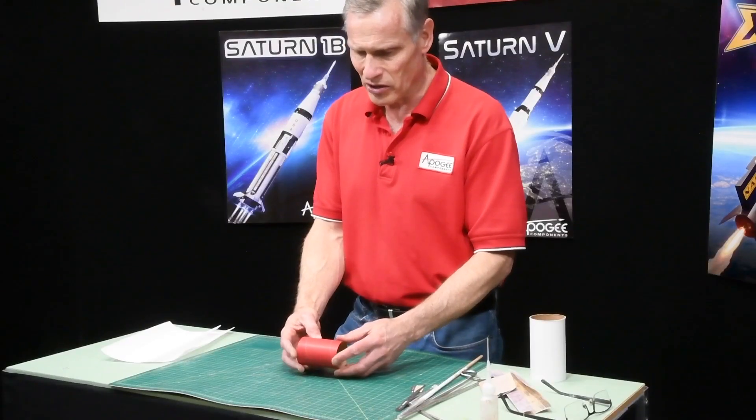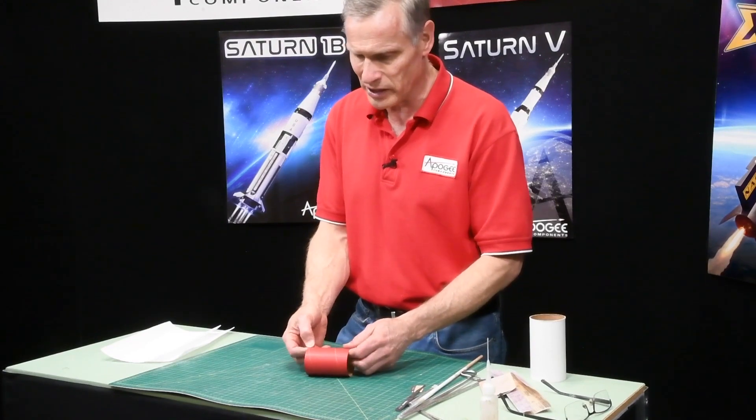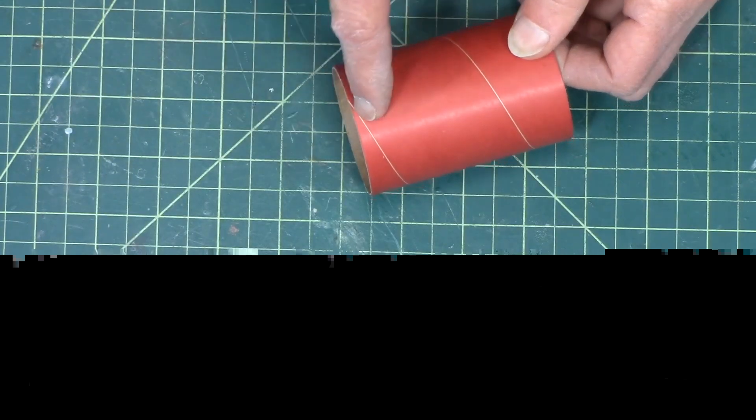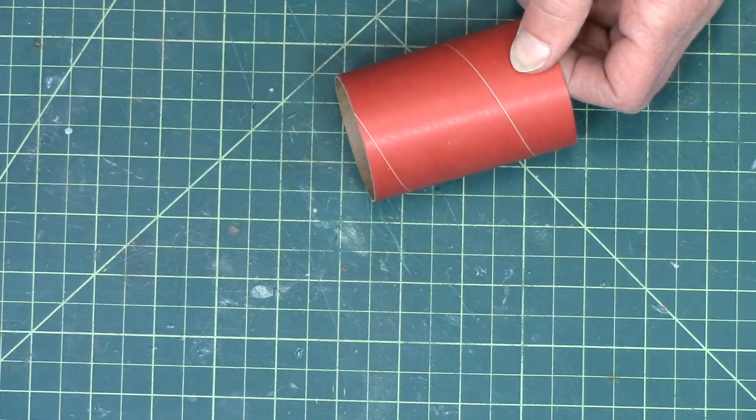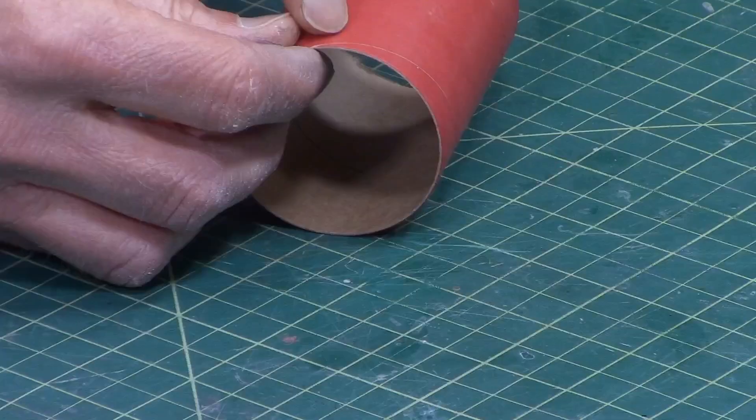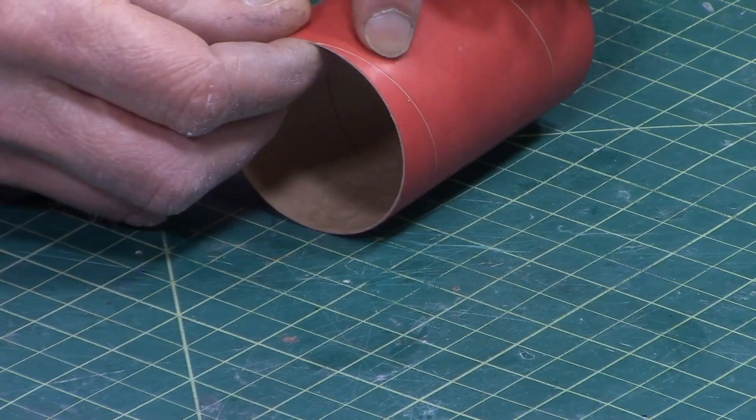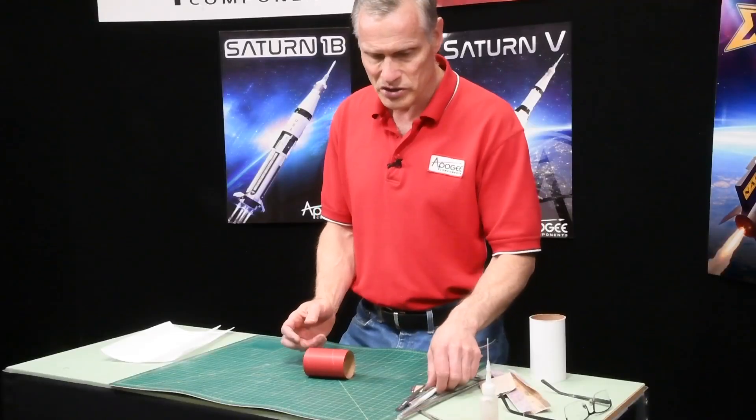The technique involved is finding where the overlap is, and on a spiral wound tube, which most all tubes are, it's really easy because there's a seam and if you just find that seam you can start peeling.